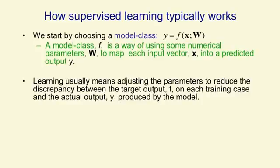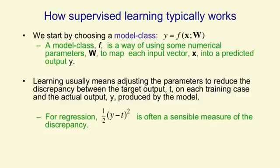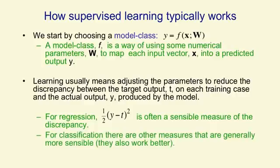What we mean by fit is minimising a discrepancy between the target output on each training case and the actual output produced by our machine learning system. An obvious measure of that discrepancy, if we're using real values as outputs, is the squared difference between the output from our system y and the correct output t, and we put in that half so it cancels the two when we differentiate. For classification, you could use that measure but there are other more sensible measures which we'll come to later, and these more sensible measures typically work better as well.